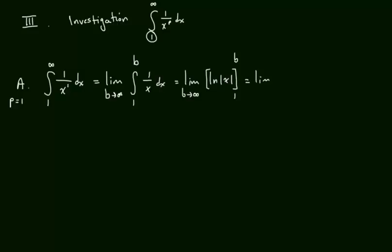and we're going to take that from 1 to b. This equals the limit as b goes to infinity, natural log of b minus natural log of 1. The natural log of 1 is 0, but the limit as b goes to infinity of natural log of b goes to infinity. So this guy here diverges. When p equals 1, it diverges.